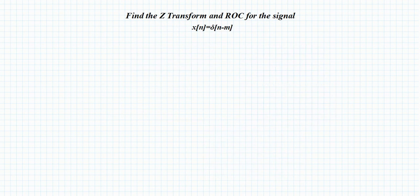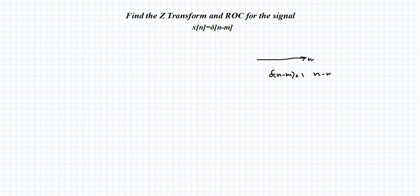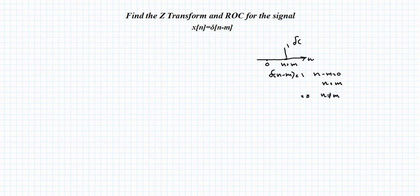Now we discuss the next question: a slightly modified version of the impulse signal, δ[n − m]. This signal is defined as 1 when n − m = 0 (i.e., n = m) and 0 when n ≠ m. Graphically, the function magnitude is 1 at the point n = m and zero everywhere else.